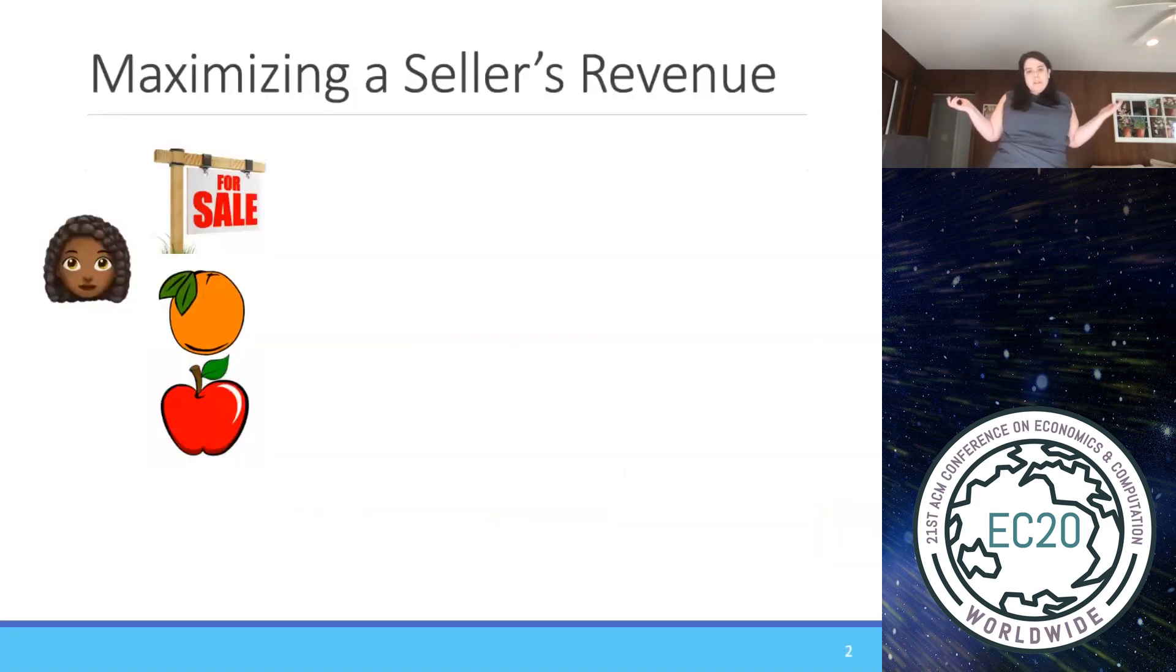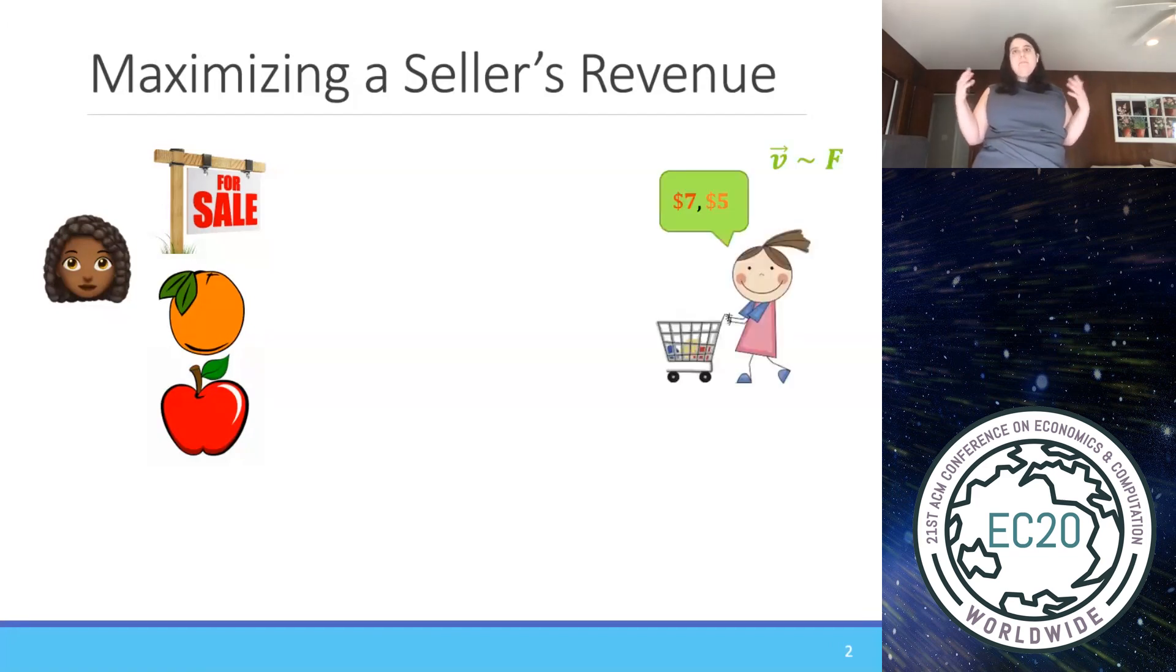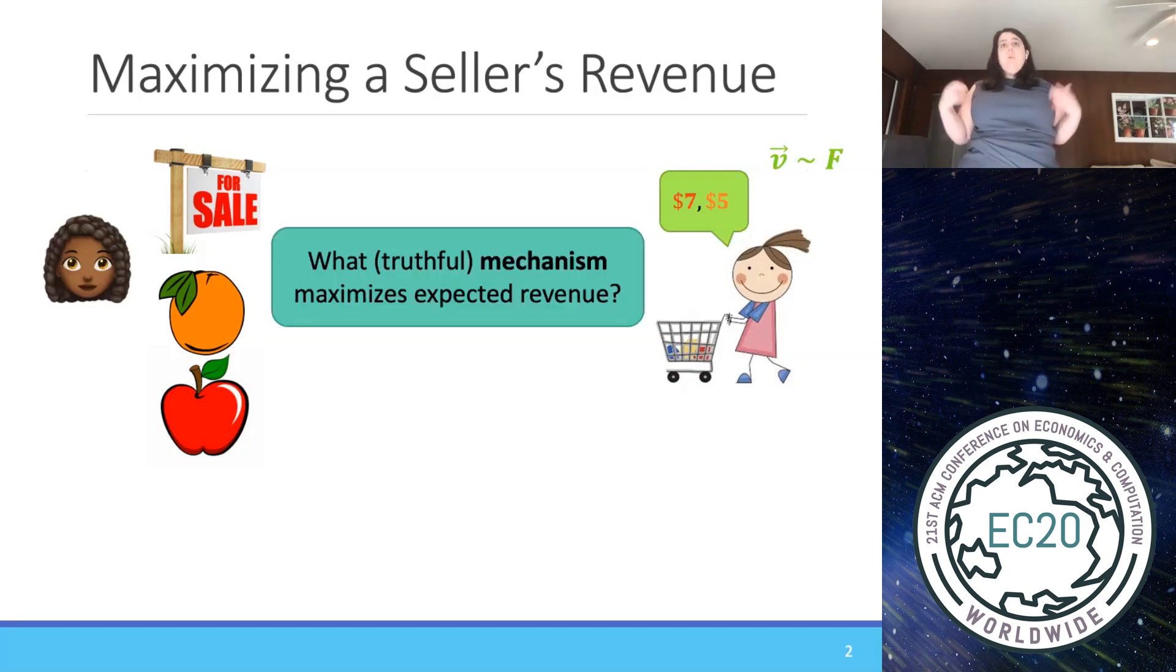So one of the most fundamental problems in algorithmic game theory is how can a seller maximize her revenue? Say we have a seller who has an apple and an orange for sale, and we have some buyer who comes along. She has some value for each item, say $7 for the apple, $5 for the orange, and these are her private information. So the seller does not know them. However, they're drawn from some prior distribution which is known to the seller. And the question is, what mechanism, some truthful mechanism, should the seller use to maximize her expected revenue with respect to the prior distribution?